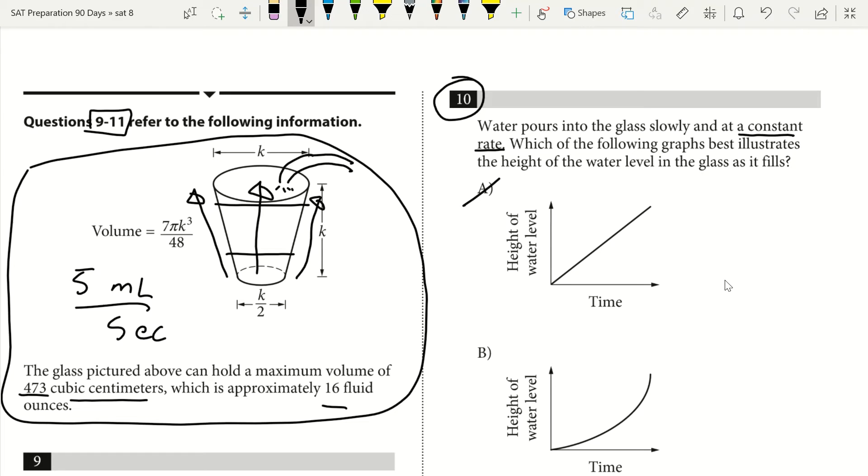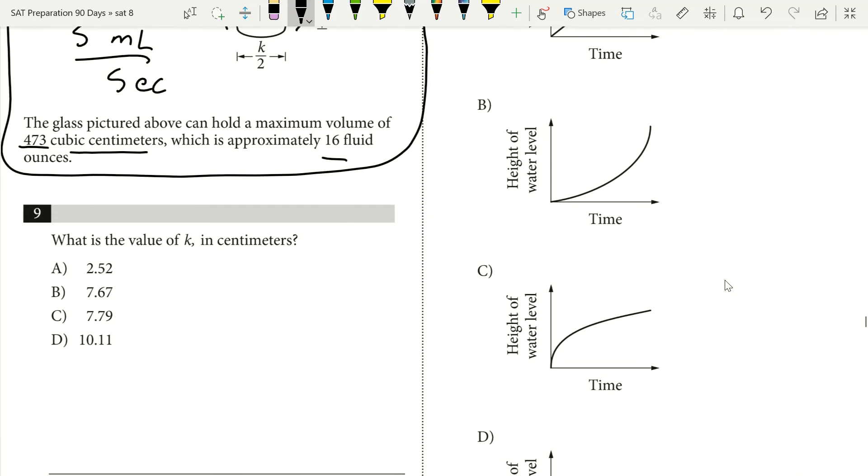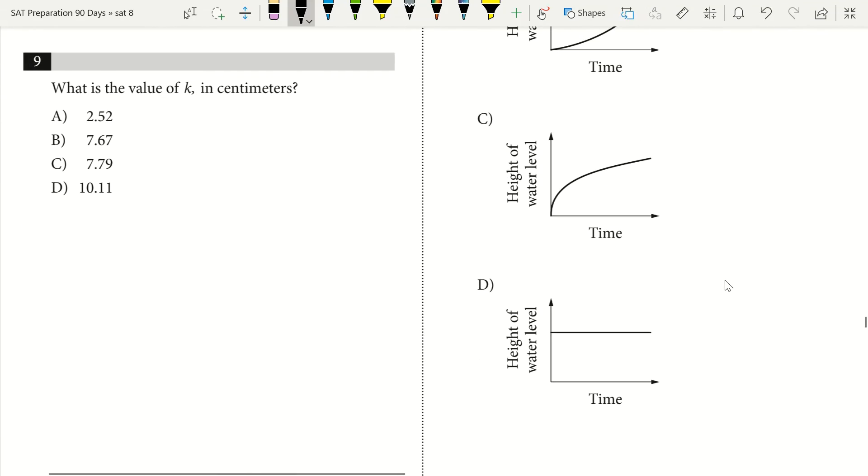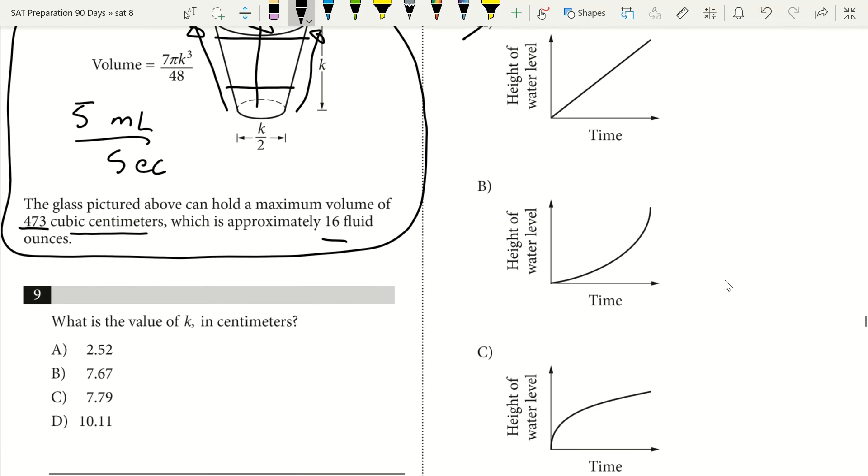We know it's not going to be a slope that's constant. We know it's going to have to be a changing slope. Now the other thing that we know, obviously D is incorrect because that shows that the height doesn't change, and then between B and C we know that the answer is going to be C because that water level height is going to increase quickly at first where that cup is small at the bottom.